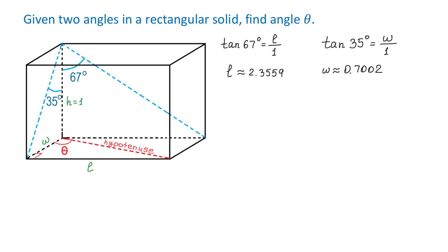Now, once we have the length and the width, we can find angle theta. We use the tangent function again and write that tangent of angle theta equals the opposite side, which is the length, divided by the adjacent side, which is the width. So tangent of angle theta equals L over W.